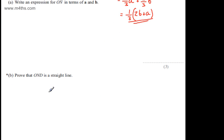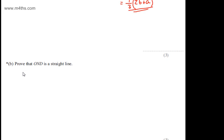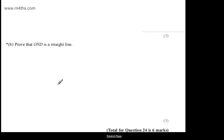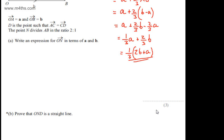Moving on to part B. And this is an asterisk question, so we will be awarded marks for the quality of written communication. In part B, we're asked to prove that OND is a straight line. And this part carries three marks.